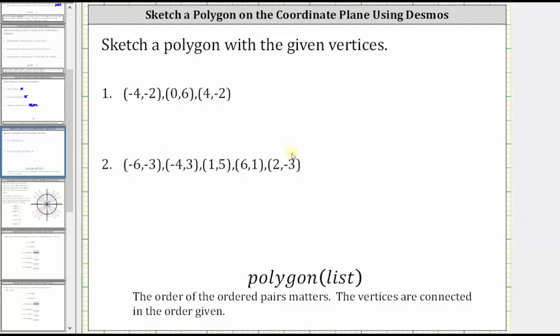In number two, we have five vertices, and therefore the polygon will be a pentagon. The order of the ordered pairs matters. The vertices are connected in the order given.